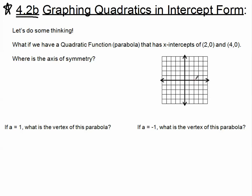Let's plot those two points: an x-intercept of 2 and an x-intercept of 4. If these are two points on our parabola, the axis of symmetry would have to be exactly in the middle of these two x-intercepts — and you would be correct. The axis of symmetry will be exactly in the middle of any two symmetrical points on our parabola. So our axis of symmetry in this case would be x equals 3, which is the midpoint of 2 and 4.